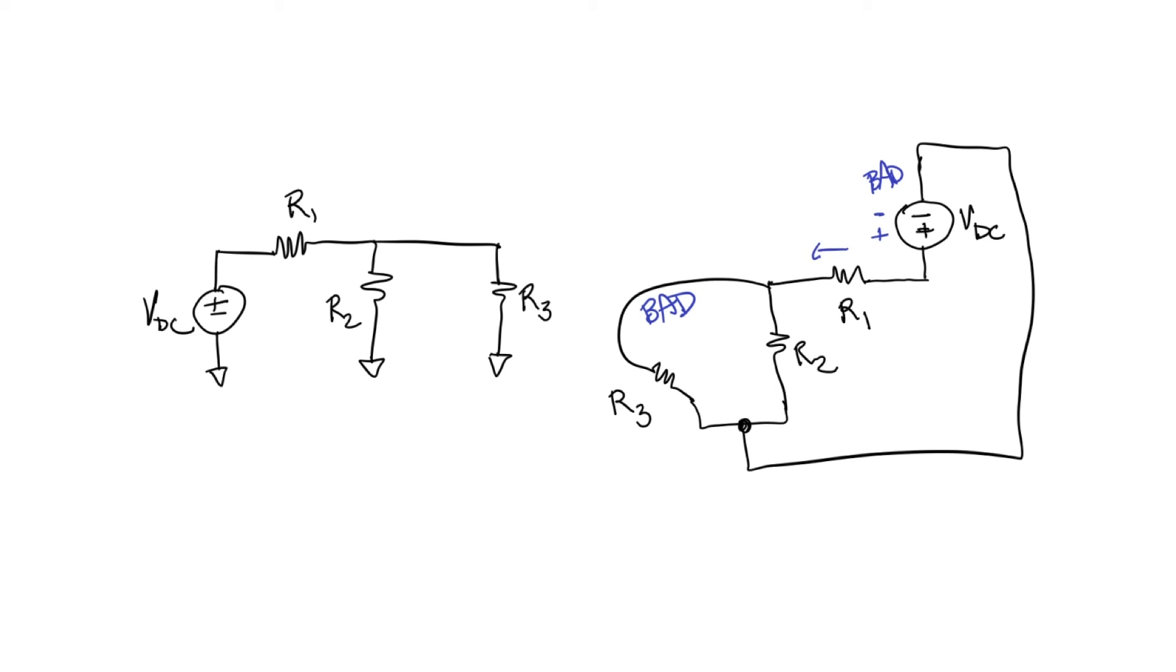Whereas with the good diagram, the flow of power was left to right because power was supplied by the DC voltage source and power was consumed successively by resistors R1 and R2 and R3. Whereas with the bad diagram, the power flow was kind of inconsistent here. So I hope you can see now the difference between a good wiring diagram and a bad wiring diagram.